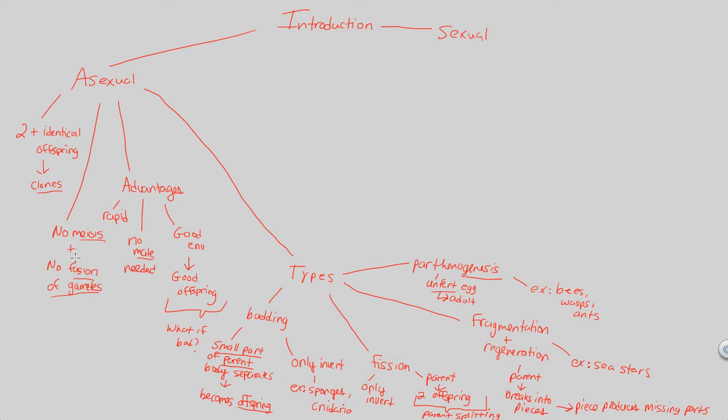Sexual reproduction involves these two things that were not involved in asexual reproduction, and that is meiosis and gametes. Both of these are critical for sexual reproduction to occur and they must be occurring and present.